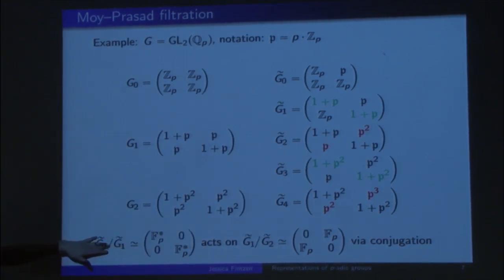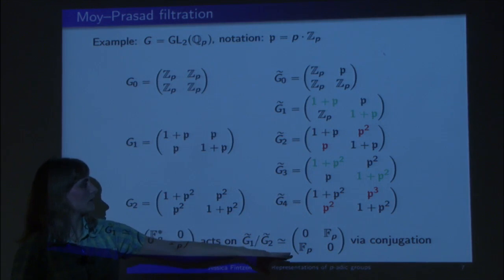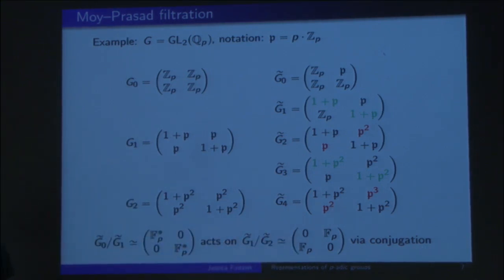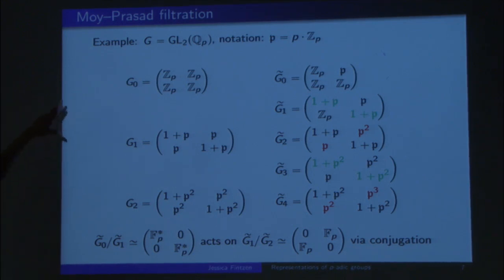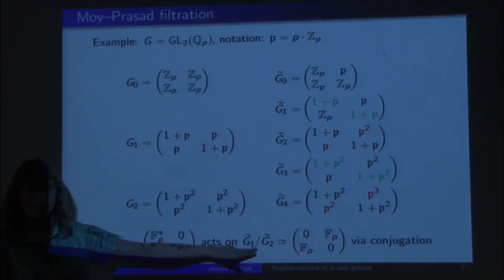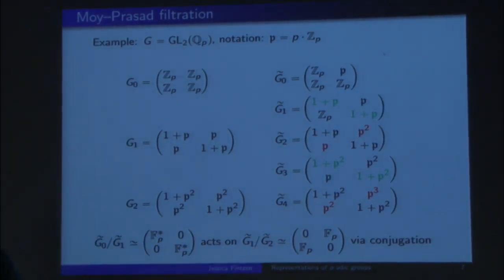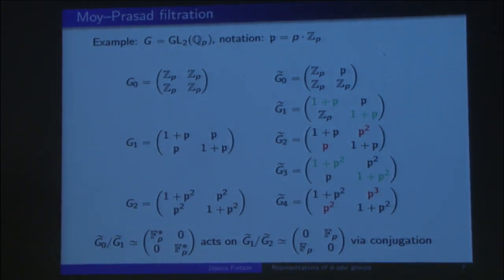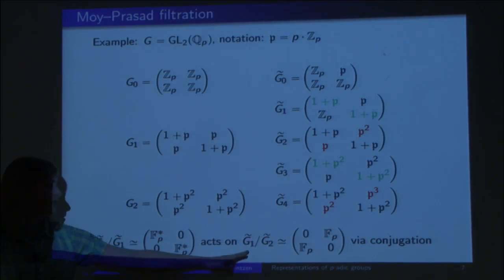Again, if you look at this filtration, the first quotient is some nice group, and it acts on the second quotient, which is just matrices with F_P in the anti-diagonal terms. In general, whatever group and whatever filtration you take, you always get a nice structure: the first quotient is a reductive group over the residue field, and all the other quotients are vector spaces over F_P. Studying this action gives you information about the compact group and its representations. One of the applications of my previous work was to give an explicit description of these quotients.